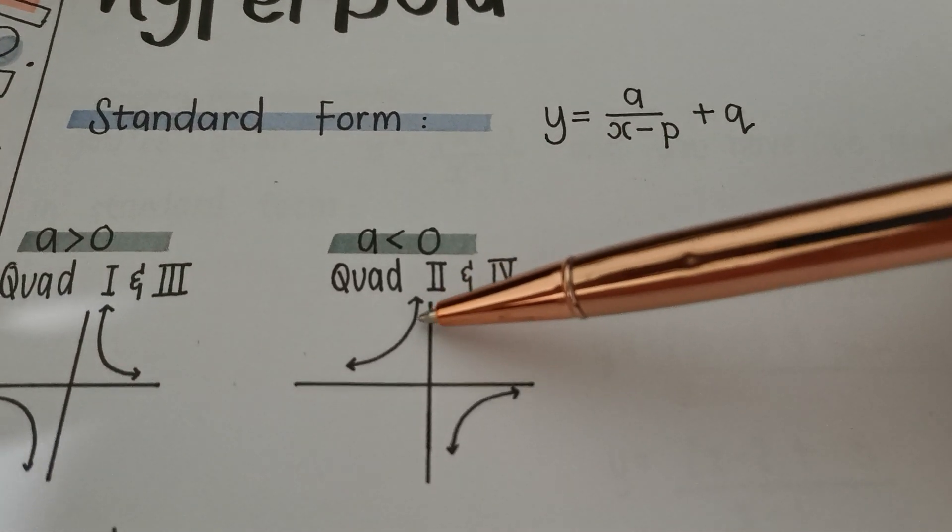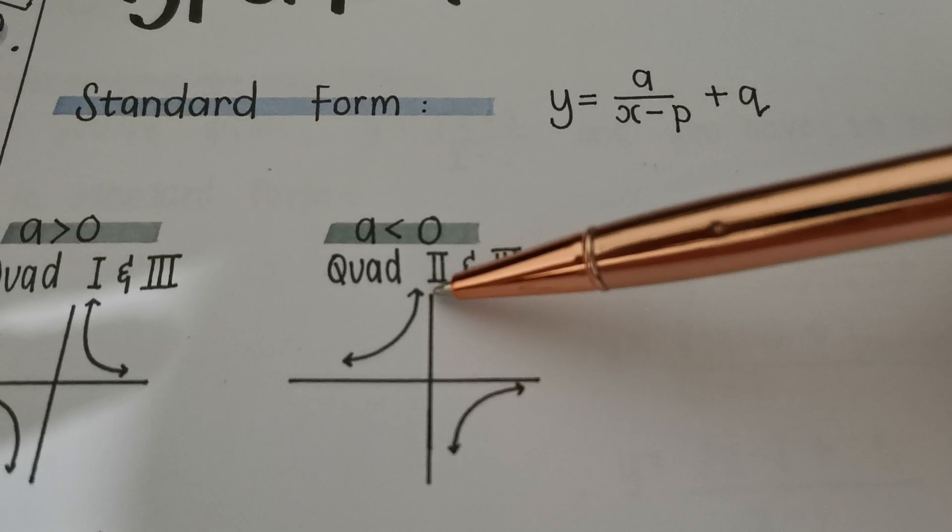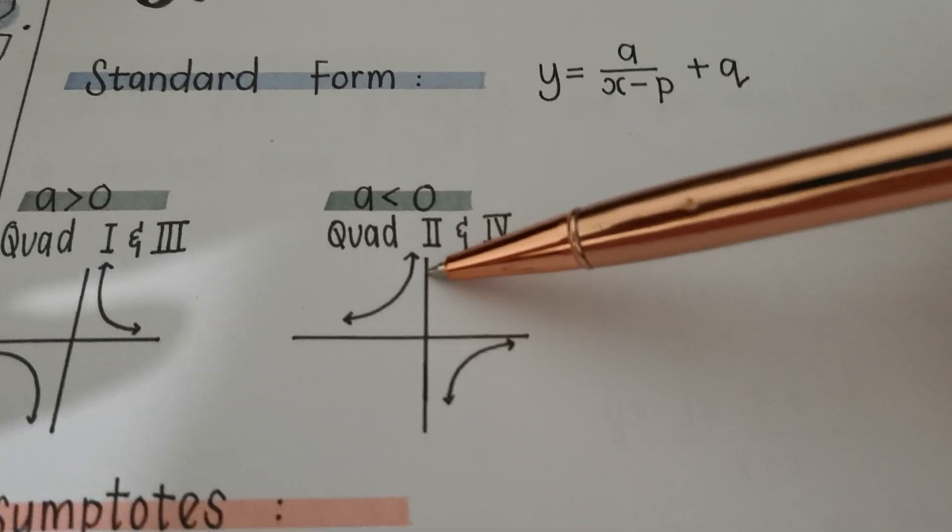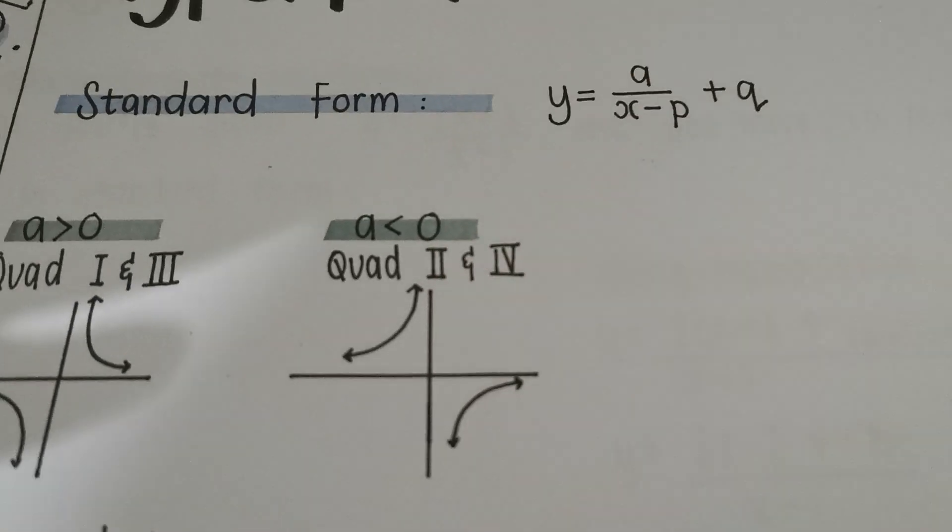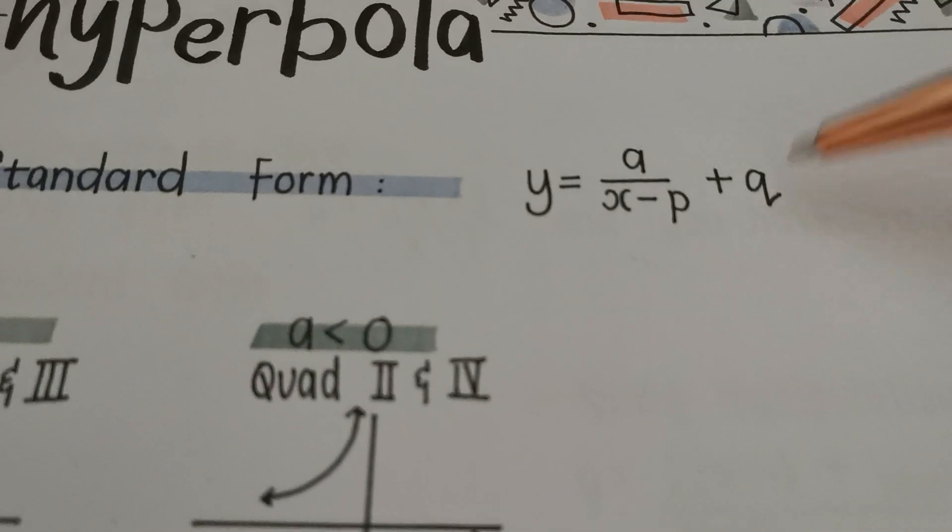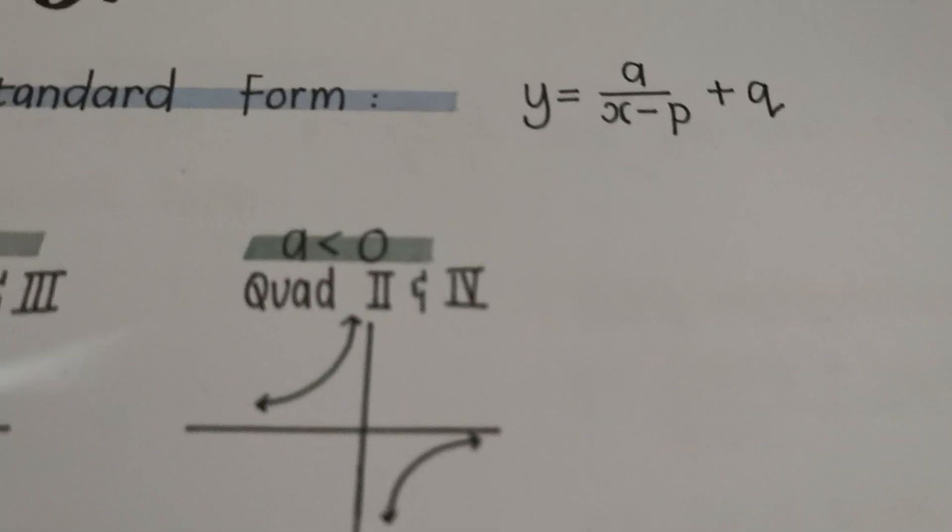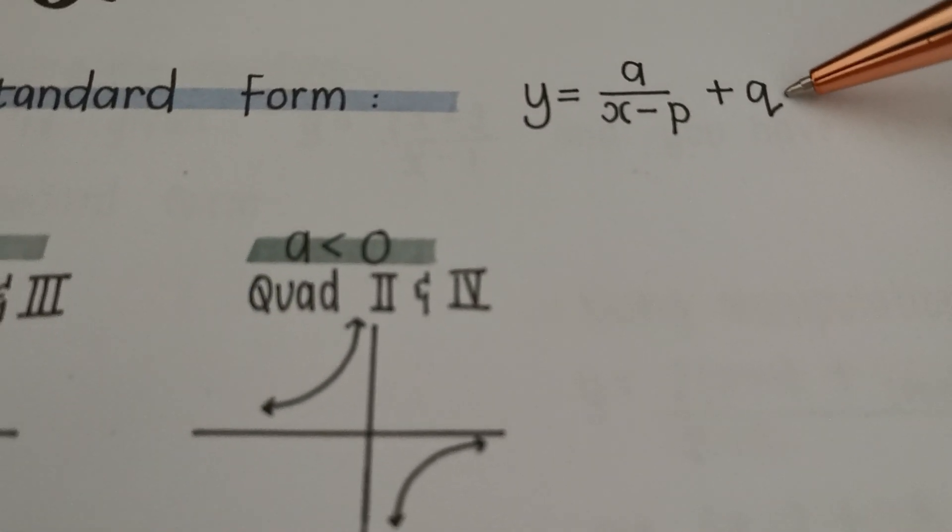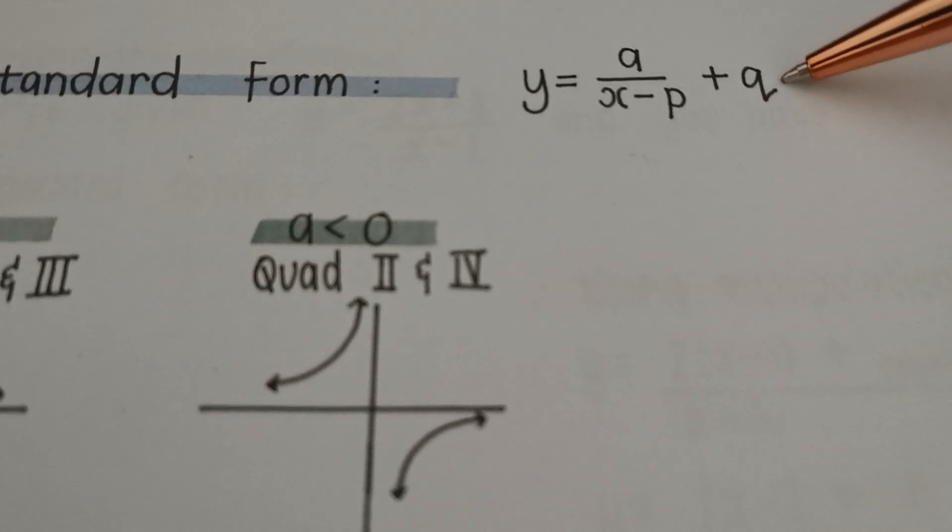Okay, it's this graph coming really, really, really close to this line over here, just never, ever touching it. So this q-value over here, and this is important, this theory is very important, this q-value over here is our asymptote.